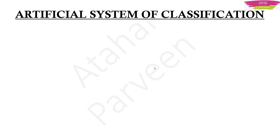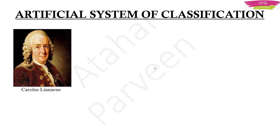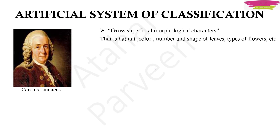The first system of classification is the artificial system of classification, given by scientist Carolus Linnaeus. This classification is based on gross superficial morphological characters — that means characters you can observe with your naked eyes, like color, number, shape of leaves, types of flowers, etc. But this classification had its own drawbacks.